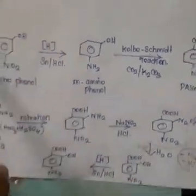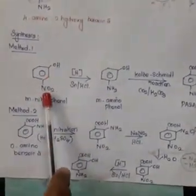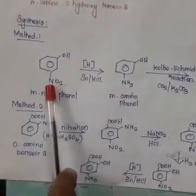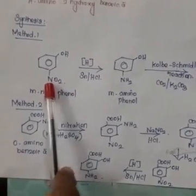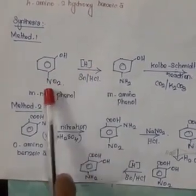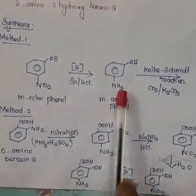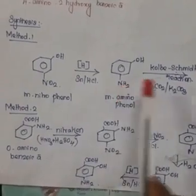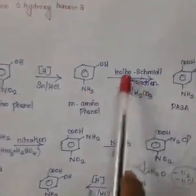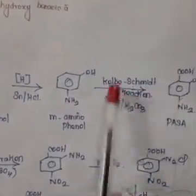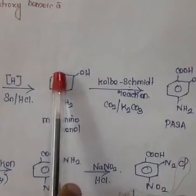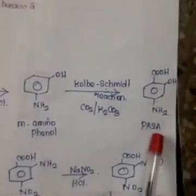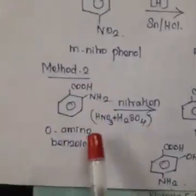In the synthesis: we take meta-nitrophenol (phenol with a nitro group at meta position), which undergoes reduction to give an amino group, followed by carboxylation using the Kolbe-Schmitt reaction where the CO2 group is attached, giving us PASA.